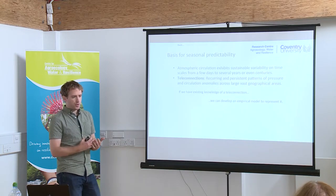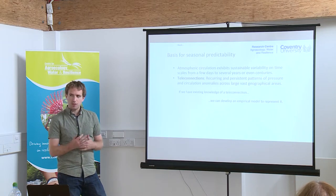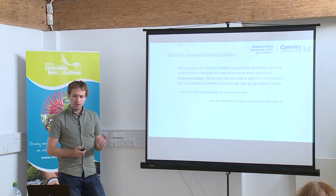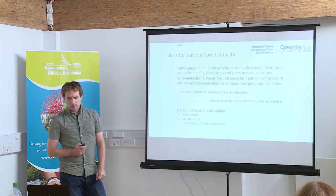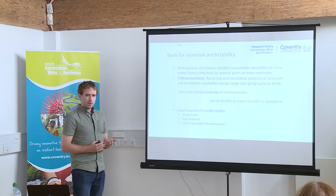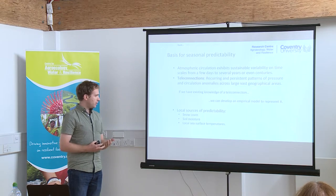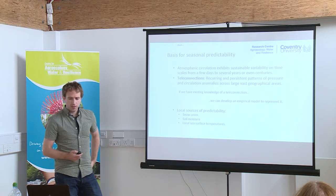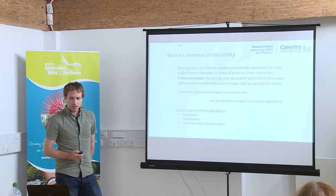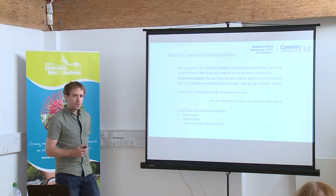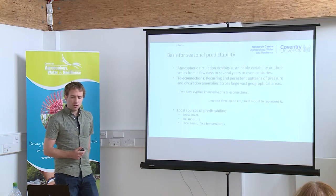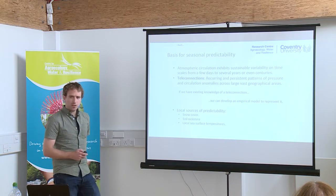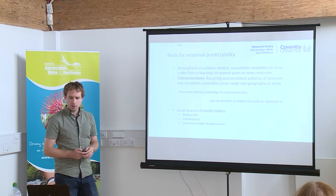That's just a sample of some of the modes of variability in the climate system that offer sources of predictability. There are also local sources of predictability, such as terrestrial snow cover and soil moisture content — very important in predicting European temperatures in spring and summer. And in coastal regions, local sea surface temperatures from a month or two in advance can also be quite useful.